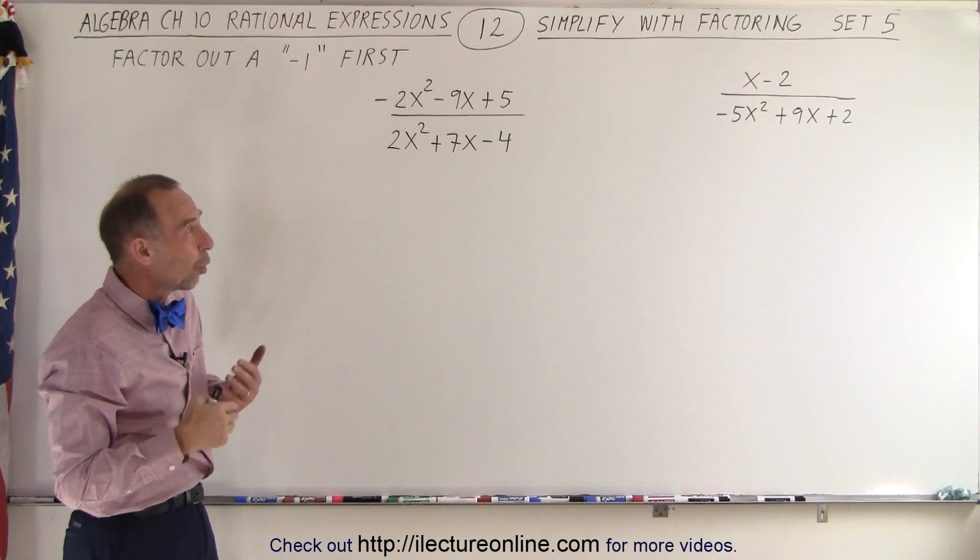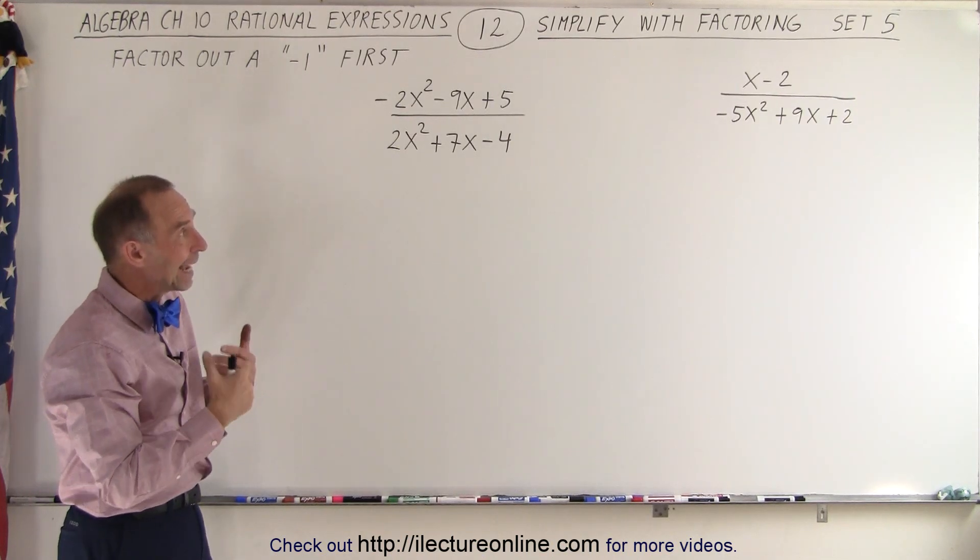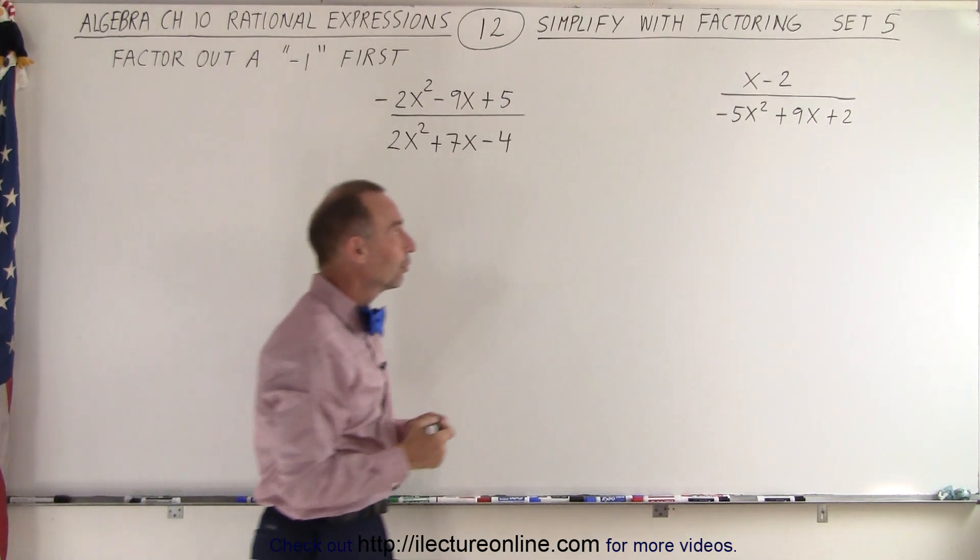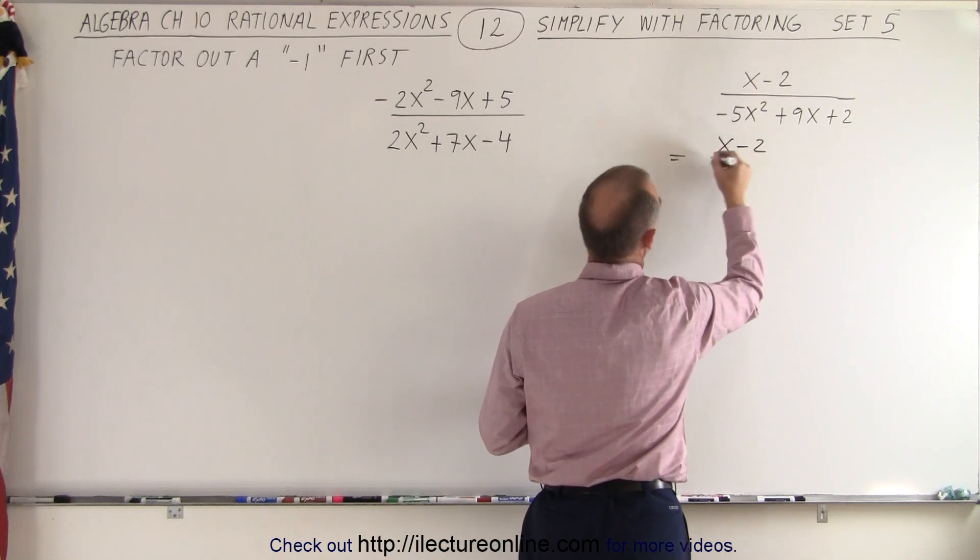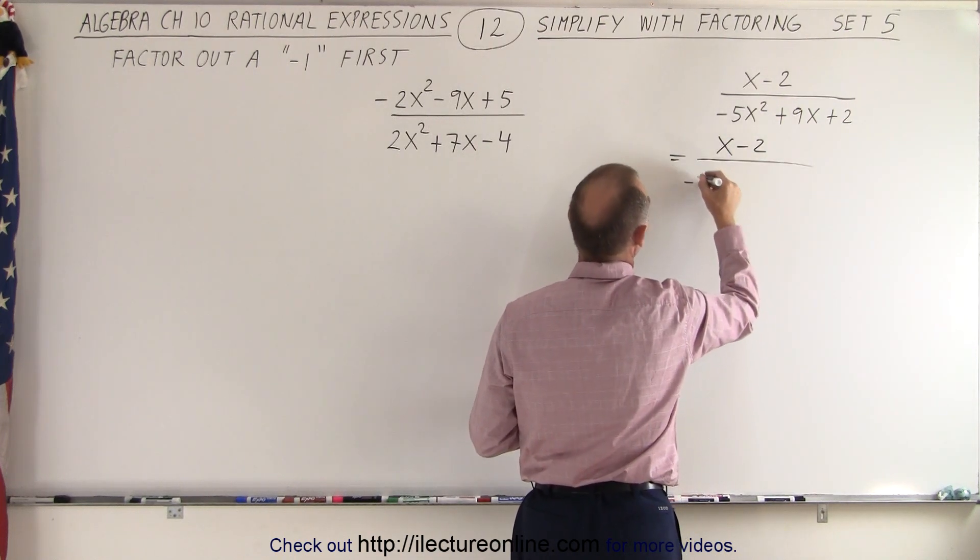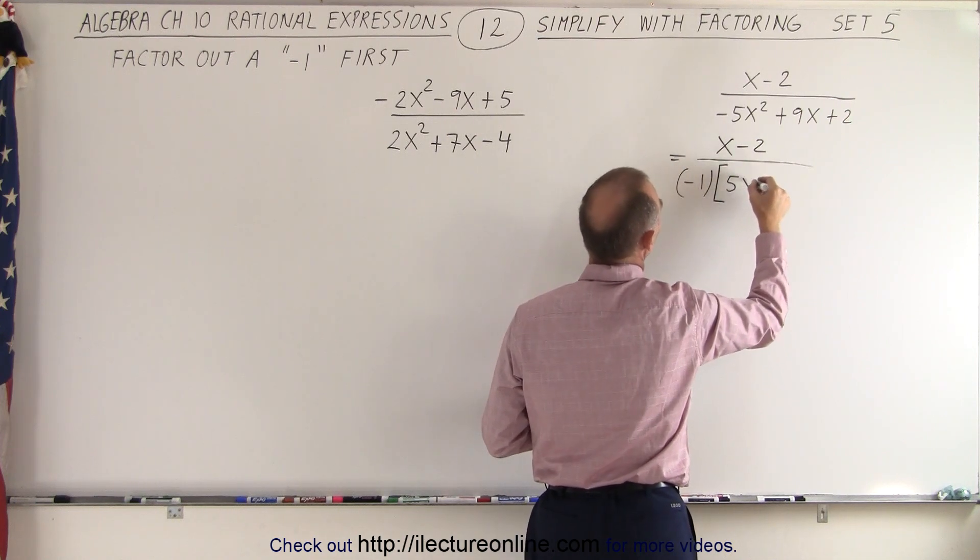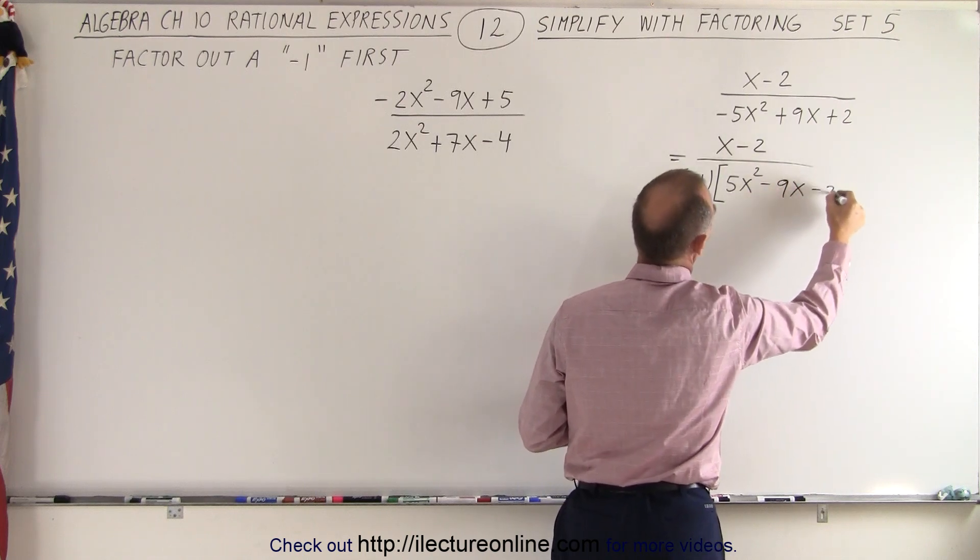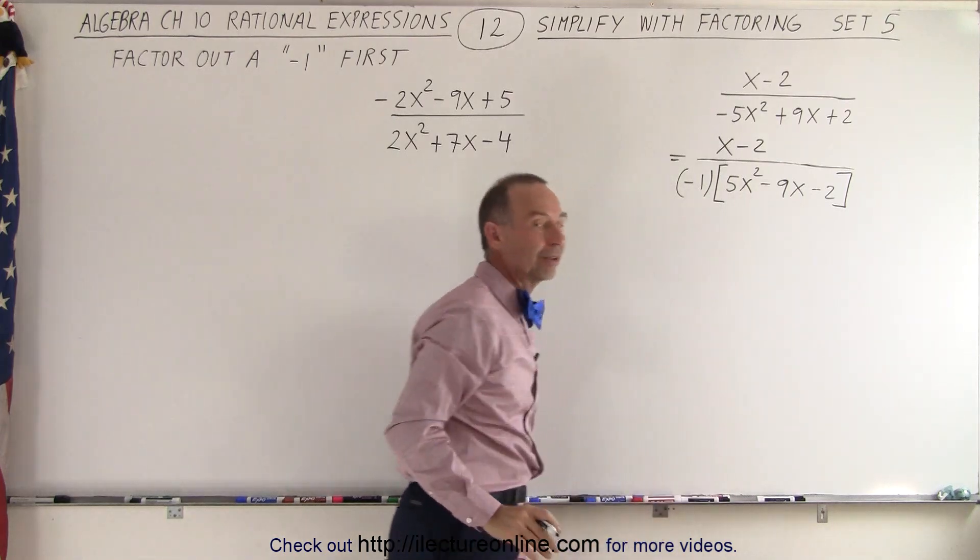So the best thing to do is to always convert, by factoring out negative 1, the x-square term to a positive quantity. So this is what we're going to do in this particular case. We'll leave the numerator alone, that's x-2, but in the denominator we're going to factor out a negative 1, which leaves us with a positive 5x-square. This becomes a minus 9x, and that becomes a minus 2. That makes it a lot easier to factor what's left.